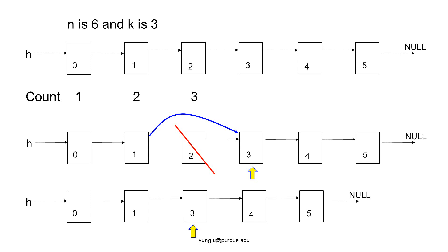You are encouraged to review what you have done for homework 3 and use your solution for homework 3 as a reference. This lecture will go through an example using n equal to 6 and k equal to 3. At the beginning a linked list is created. To be consistent with homework 3, the first node is marked 0, the second node is marked 1, and the last node is marked 5.